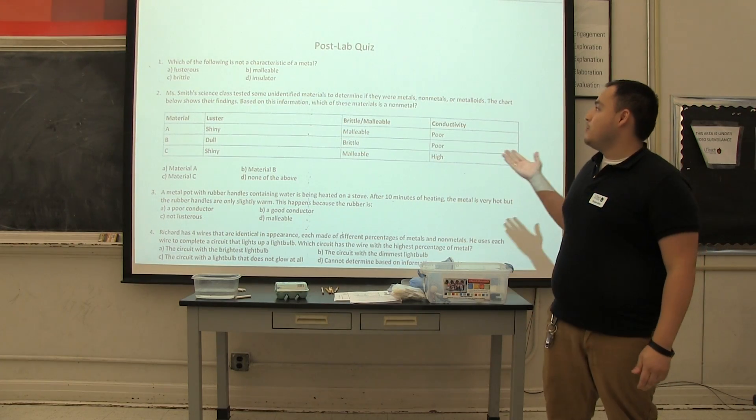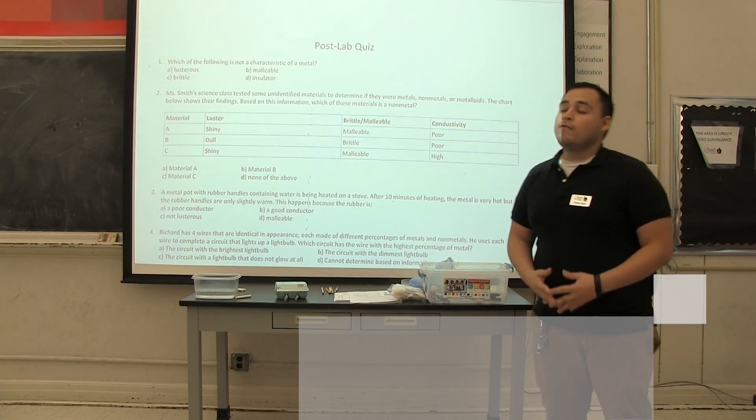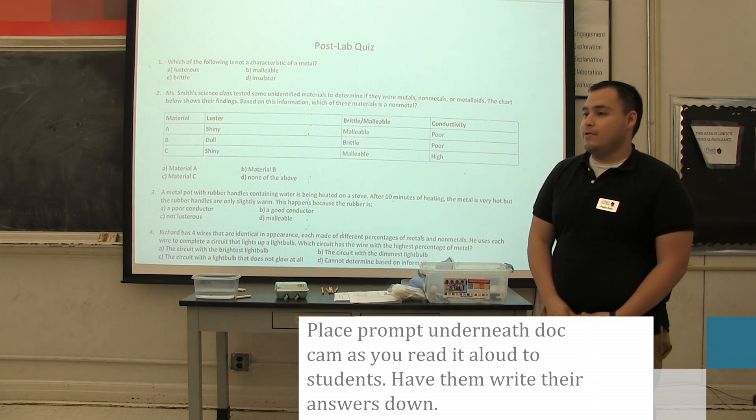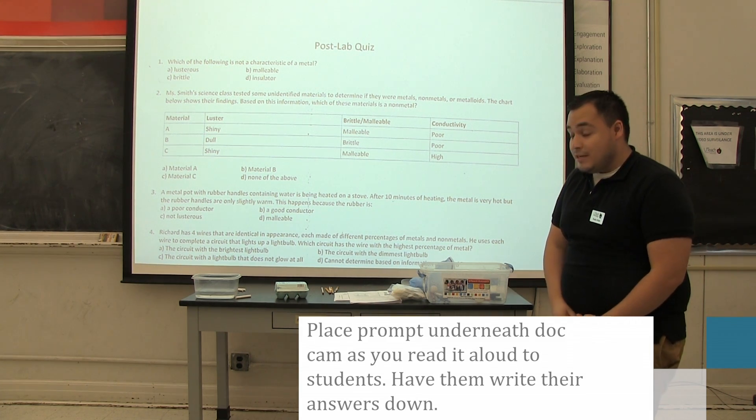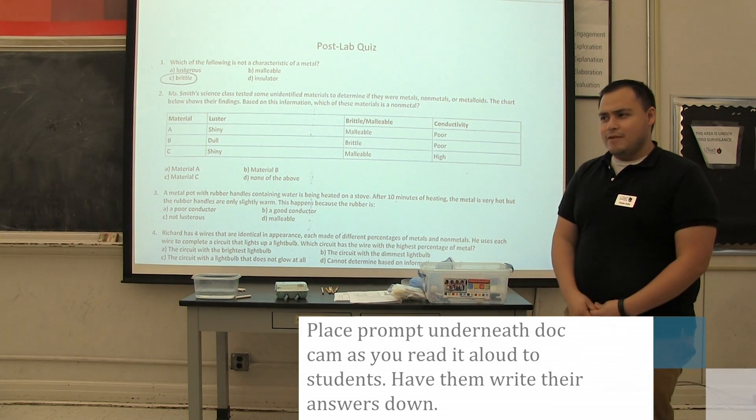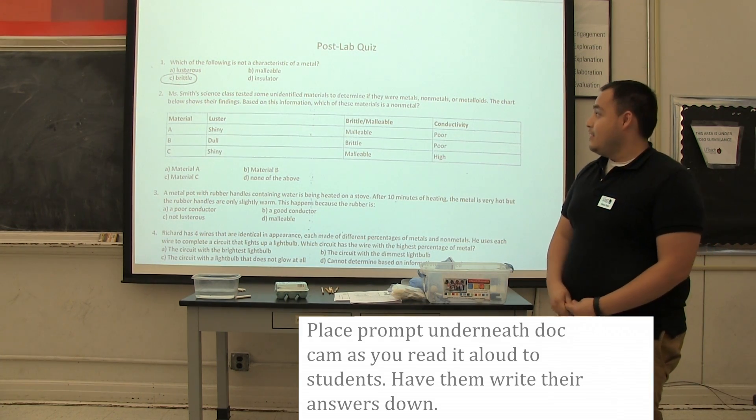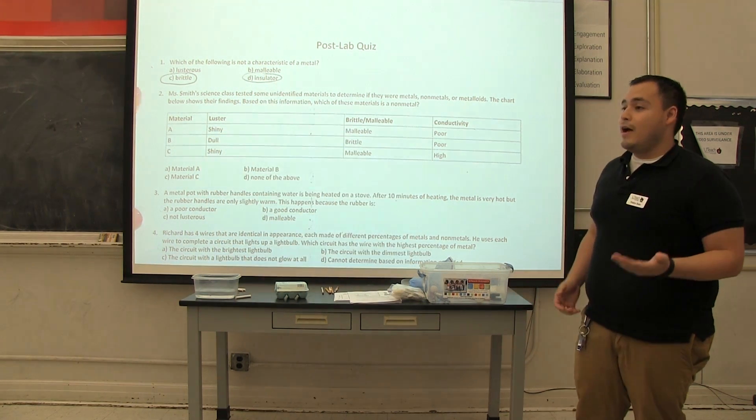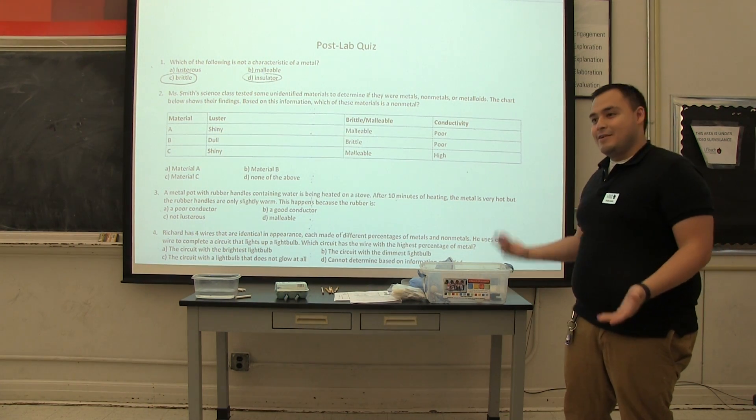So now we're going to go over the show it what you know. So for the first question, we have: which of the following is not a characteristic of a metal? C, metal. C, that's correct. But is that the only answer, Clara? Didn't you have another answer? I got D. D, it's also not a good insulator. Yes. So metals are not brittle and not good insulators.